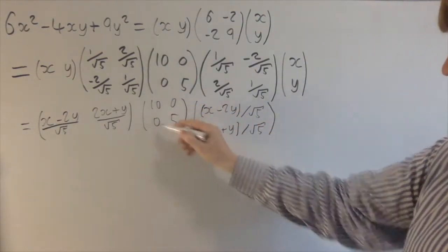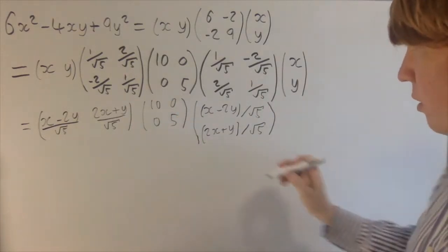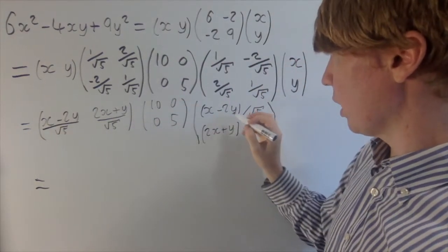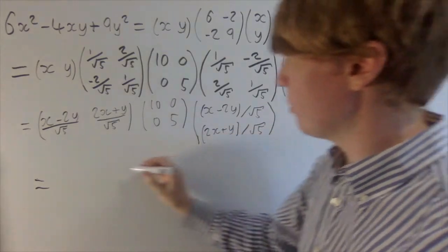Okay, so now what I'll do is I'll multiply these two together, and then we'll multiply by this finally at the end. So again, this is quite nice, so you're 10 and 0. All you're going to get is basically this same thing where you multiply by 10, and this gets multiplied by 5.